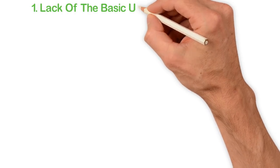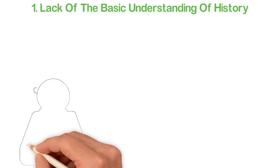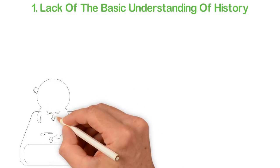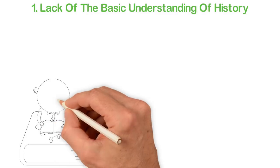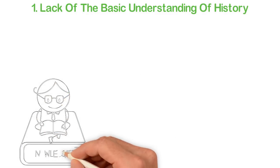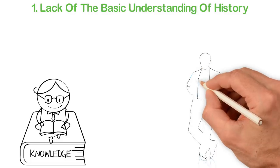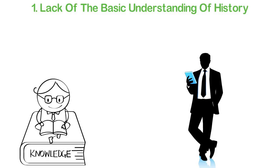Most people are poor despite enormous opportunities in this era because they lack the basic understanding of history. For you to function well in any generation, you have to have basic knowledge about the previous three to five generations. You have to know what was obtainable then and what is obtainable now. Knowing the past is the surest way to function well in the present.